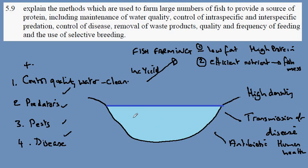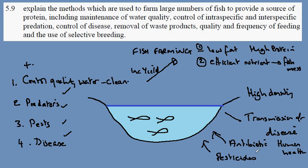The abundance of fish within the fish farm also makes pests common, and therefore some fish farmers have taken to using pesticides. This also is a cause for concern amongst humans.